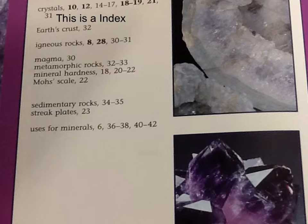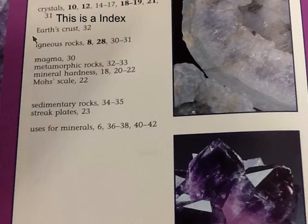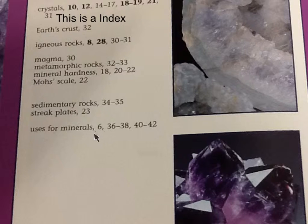This is an index. It has page numbers and a topic. For example, if you want to read about earth crust, it's on page 32. If you want to read about uses for minerals, it's on pages 36 to 38, 40 to 42.